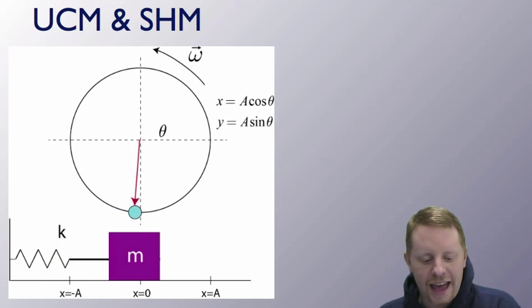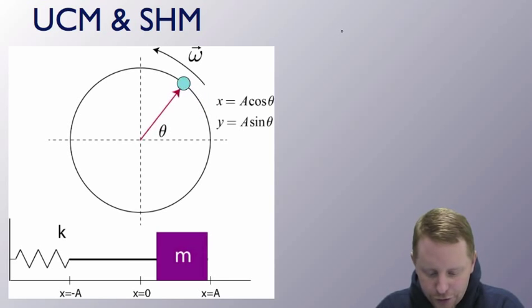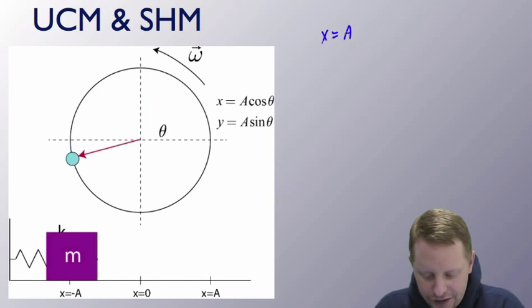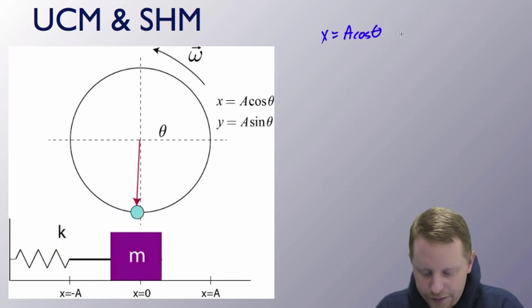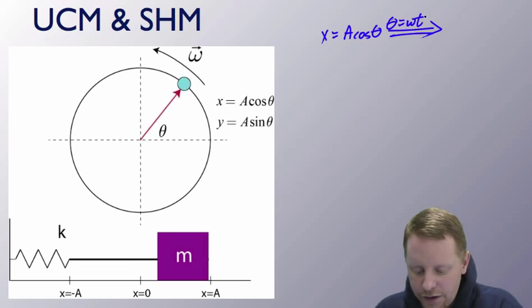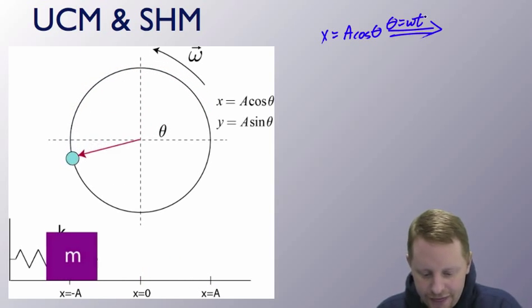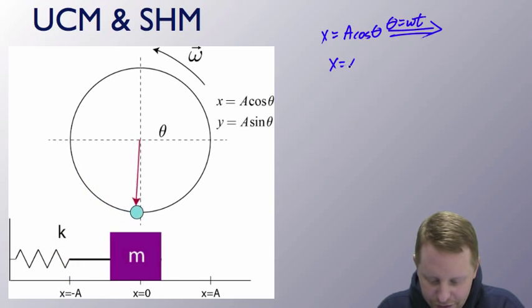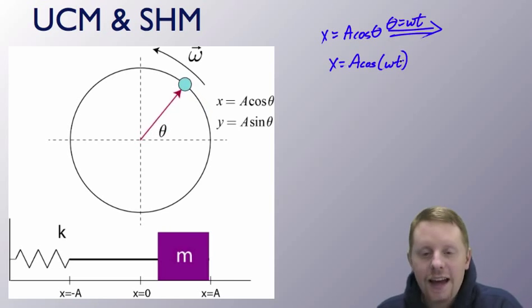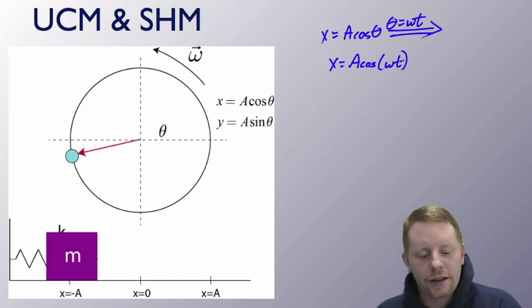Angular displacement of an object is average angular velocity multiplied by the time interval. So we could write that x equals a cos theta. And if theta equals omega t, which we know from our earlier studies on rotational motion, then we could write that x is equal to a cosine omega t, a general form for simple harmonic motion.